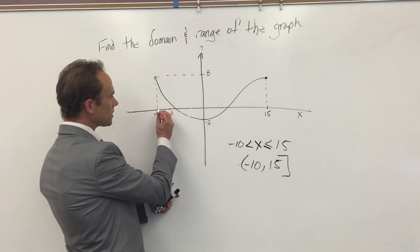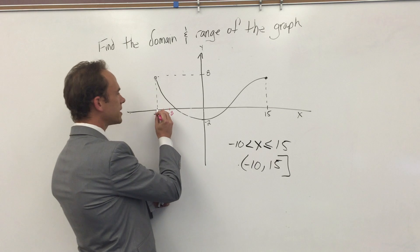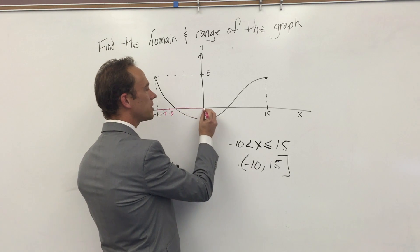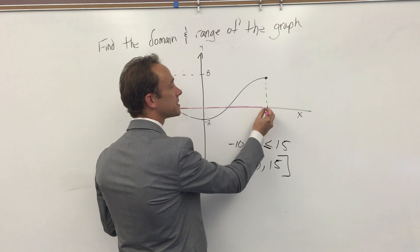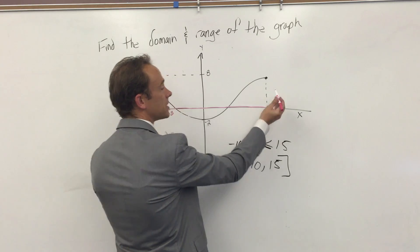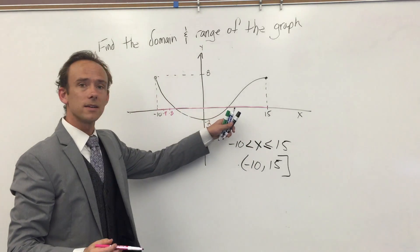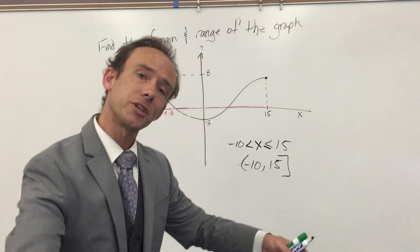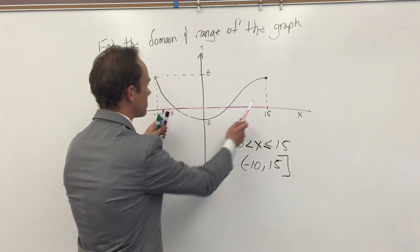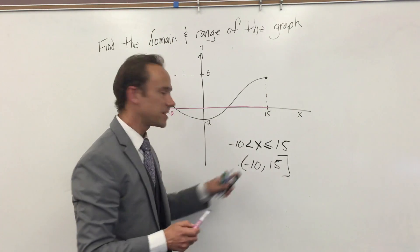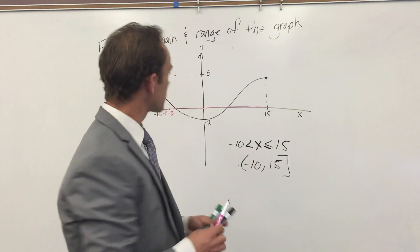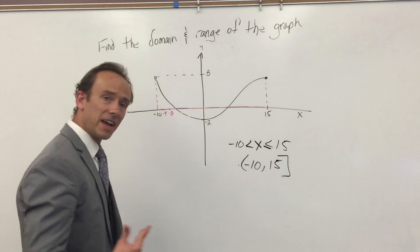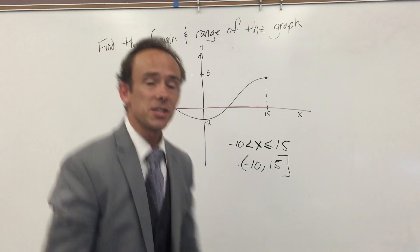A nice thing to do: just highlight everywhere along the x-axis where the graph exists. That line will tell you what the domain is. Then you only need to figure out how to express that line using symbolic language.